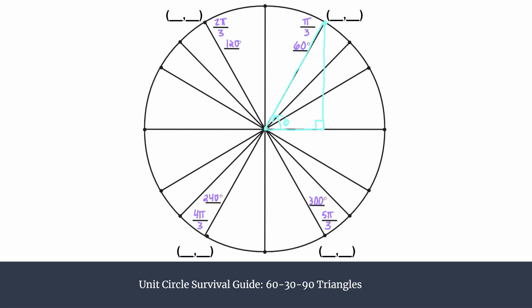We know that this angle is 60 degrees, we have a 90-degree angle, and then the other must be 30 — because the angles of a triangle sum to 180. In a 60-30-90 triangle, the short leg across from the 30-degree angle we label x, the hypotenuse is twice that length, and the longer leg opposite the 60-degree angle is the short side times the square root of three.